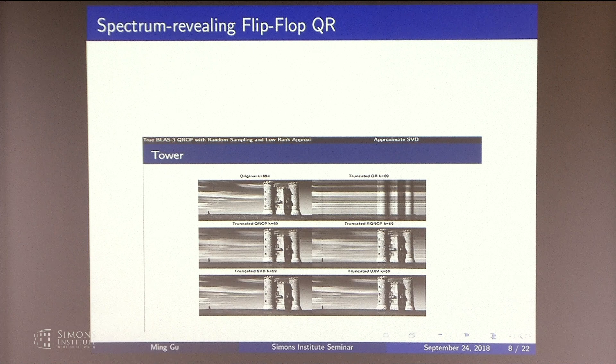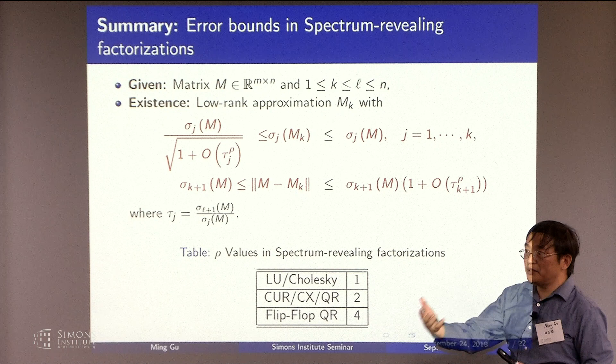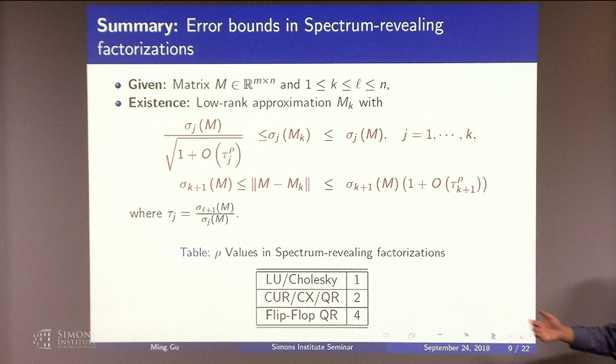We've done a lot of different factorizations here. This is just summary of what we have done so far. And it turns out that for all the major matrix factorizations, you can do the spectrum revealing version of it. And I'm going to skip all the details, but you can compute these factorizations efficiently as well.